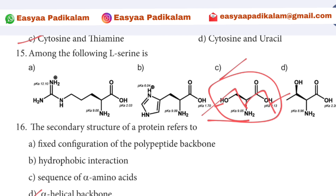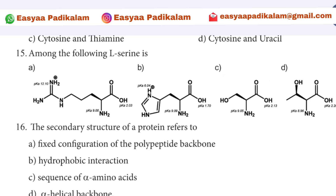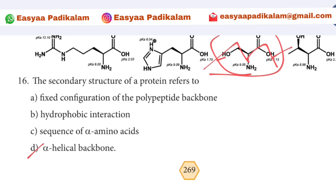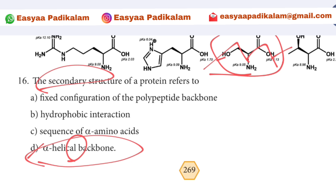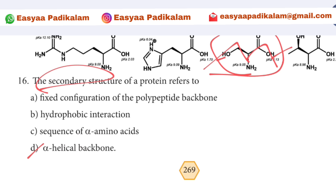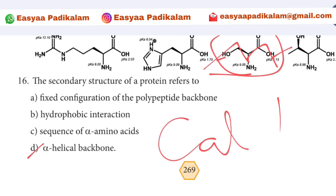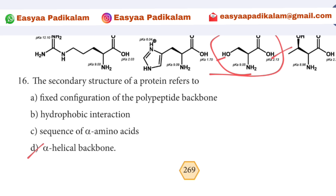16th question: The secondary structure of protein refers to the alpha-helical backbone. Secondary structure means the backbone — when it comes to the backbone it will form a helix. So the answer is alpha helical backbone.